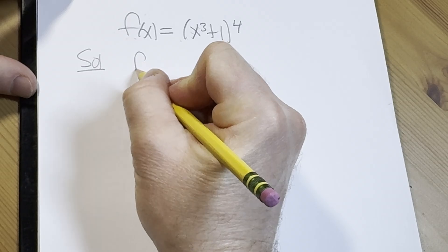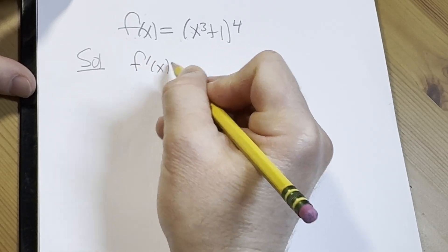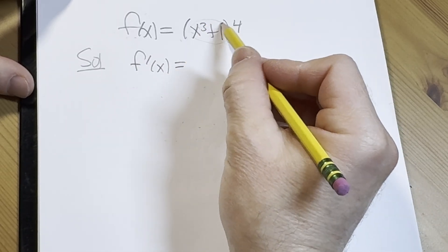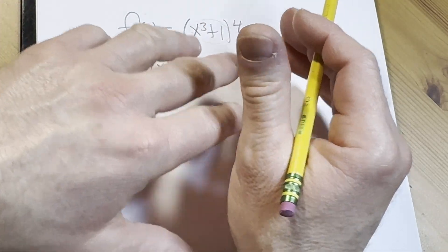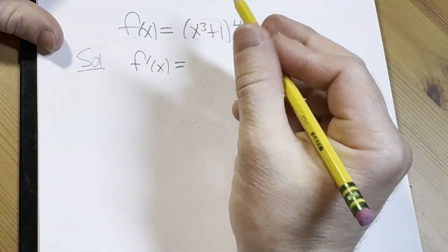Solution. So f'(x). Here we have an inside function and an outside function, so we're going to use the chain rule. We're going to take the derivative of the outside function, which is something to a power.